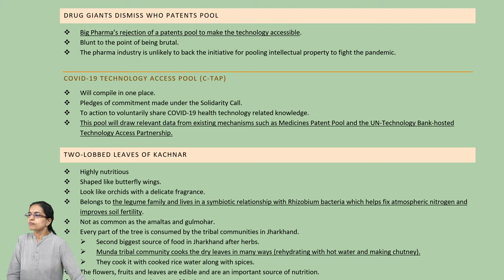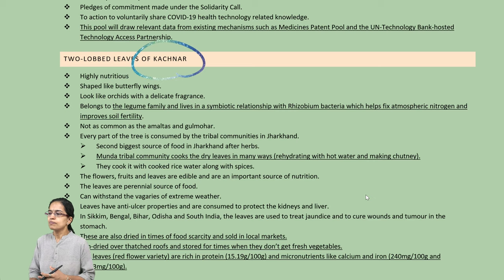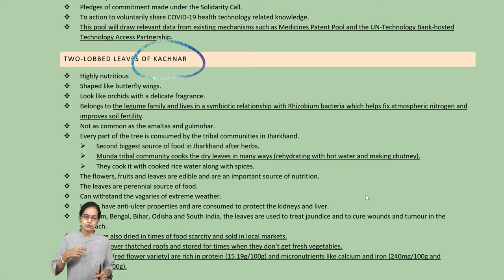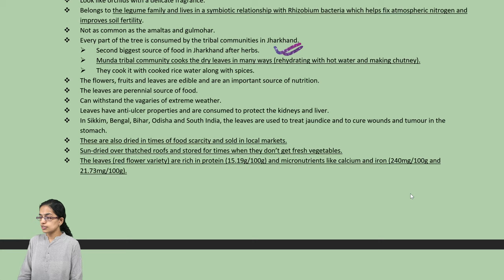Kachnar leaves are bilobed, similar to a butterfly wing. They are highly nutritious, part of the legume family, rich in protein, and have a higher amount of calcium and iron. Usually used by the Munda community, which is a tribal community, by mixing it with water for rehydration of the body and for food. It is also the second biggest source of food in the regions of Jharkhand.